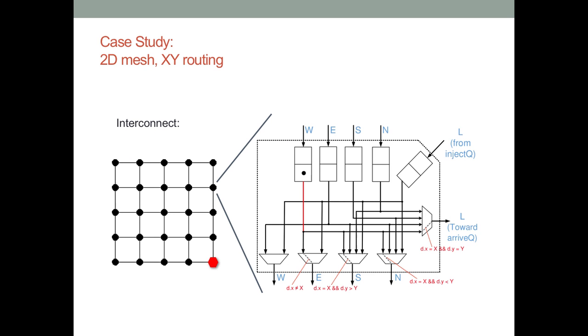As an interconnect, we also consider a very simple interconnect, a 2D mesh with XY routing, where messages first go into the X direction and then into the Y direction. Now this interconnect is well known to be deadlock free. There are no circular dependencies, and therefore no deadlocks can occur.